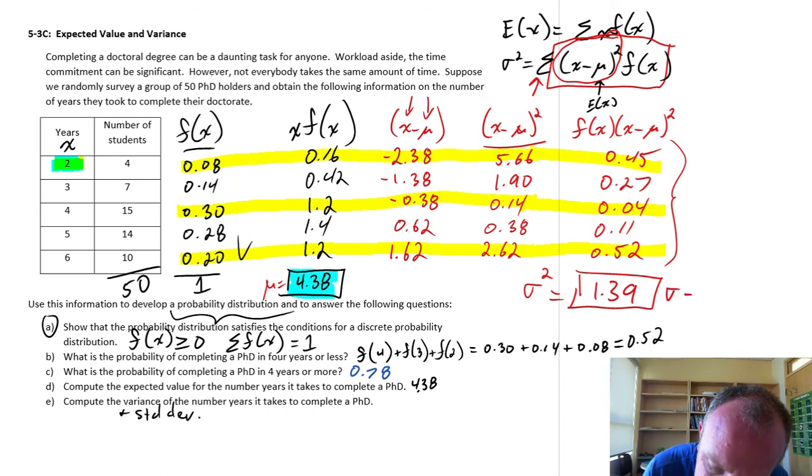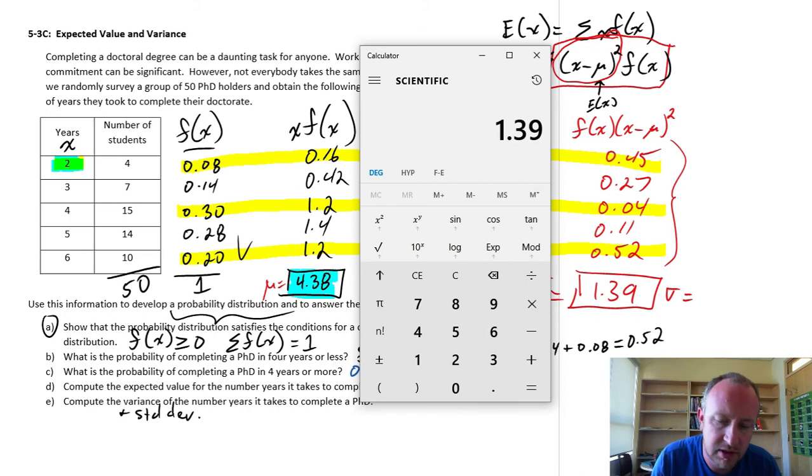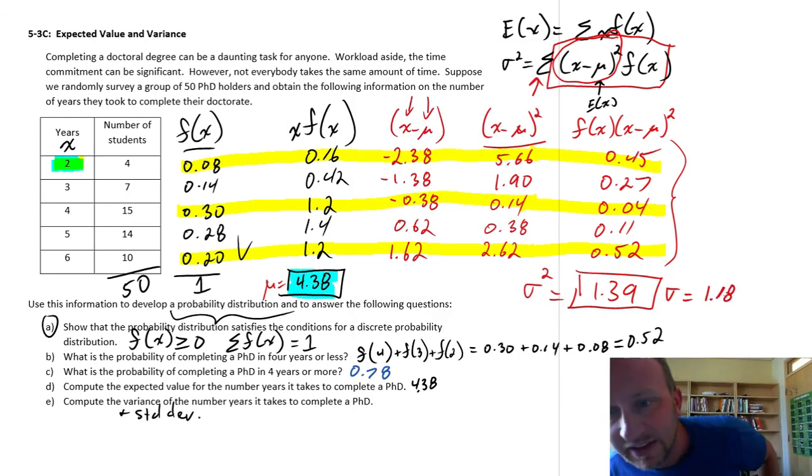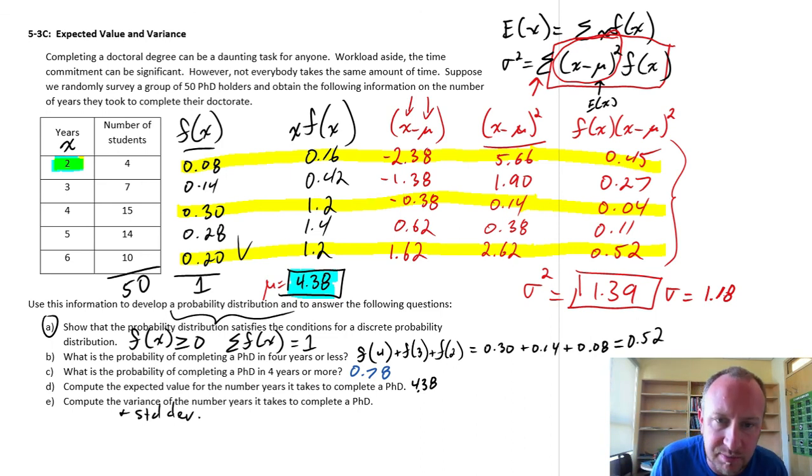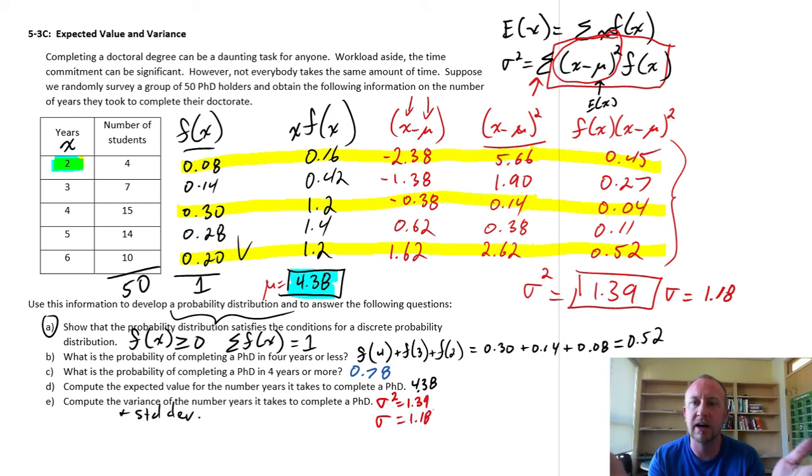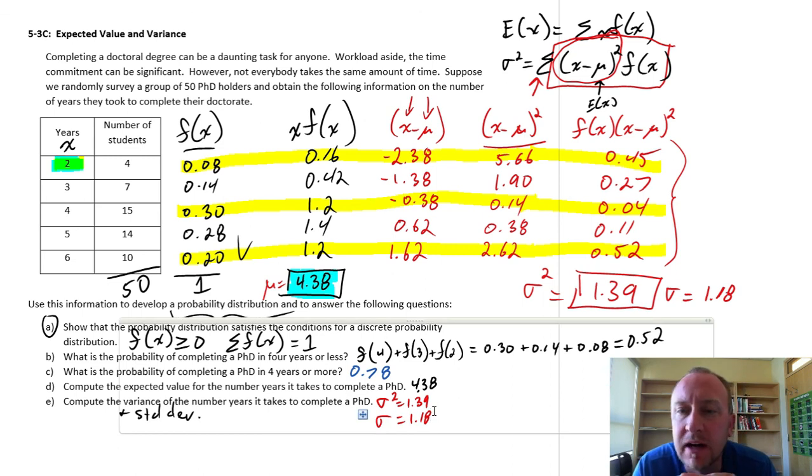So there's my calculation of the variance. If we want the standard deviation, well, it's just the square root of that variance. A little messy. Let's round that to 1.18. So we have the average number of years to complete PhD is 4.38 years, with a variance sigma squared of 1.39, or standard deviation of 1.18. So again, we have information now on the average, the location of this discrete probability distribution, and its standard deviation. So we have a little bit of information about the shape of that distribution.